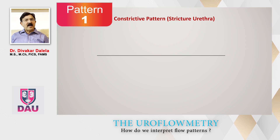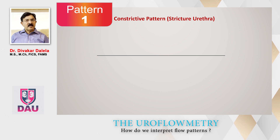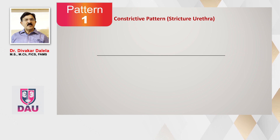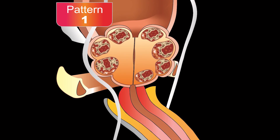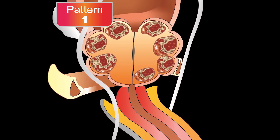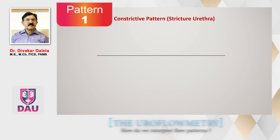Going by the patterns of uroflowmetry, there are various patterns — meaning the shape of the graph. The first pattern is called a constrictive pattern, which results typically in patients of stricture urethra, from the external urinary meatus anywhere in the urethra — penile, membranous, prostatic — up to the bladder neck. Some patients with carcinoma prostate treated by radiation or advanced prostate cancer can also give rise to a similar constrictive pattern.